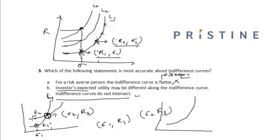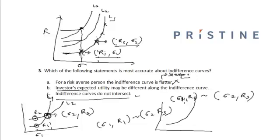Similarly, points on indifference curve l3 mean the investor is indifferent between (Sigma2, r2), (Sigma1, r2), and (Sigma2, r3). This means the investor would be indifferent between (Sigma1, r1) and (Sigma1, r2). But this cannot be the case because for the same risk, he is getting more return r2 in one scenario.